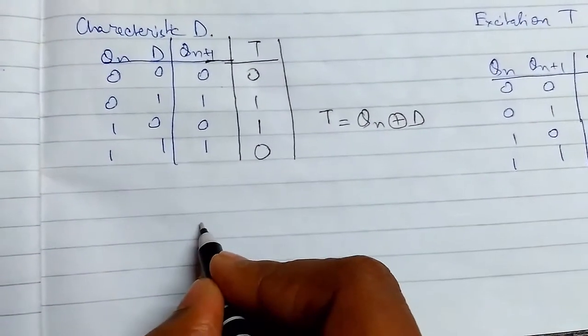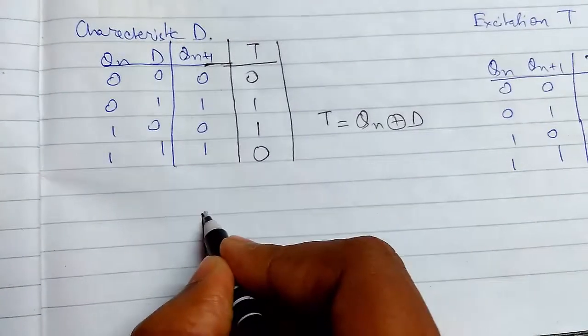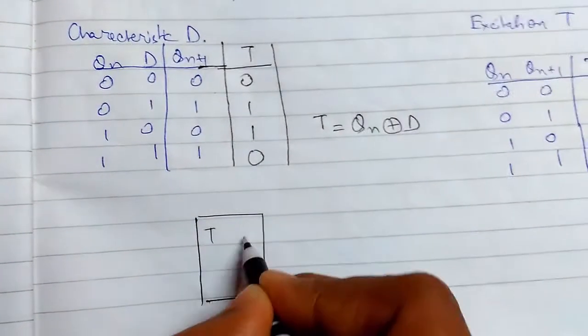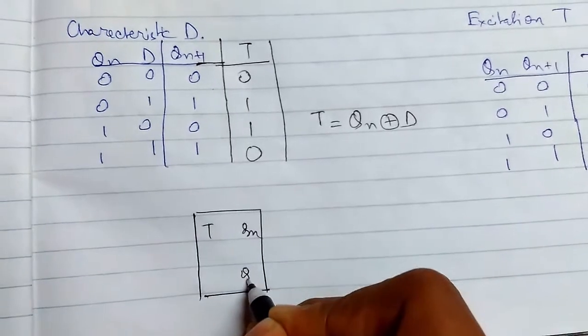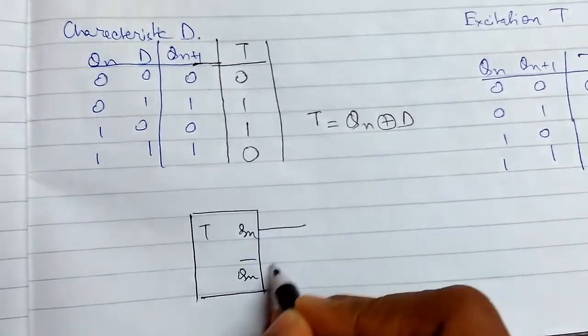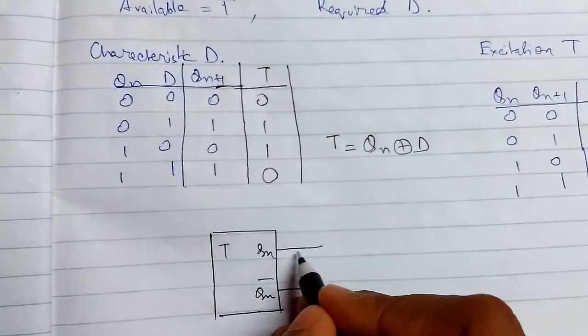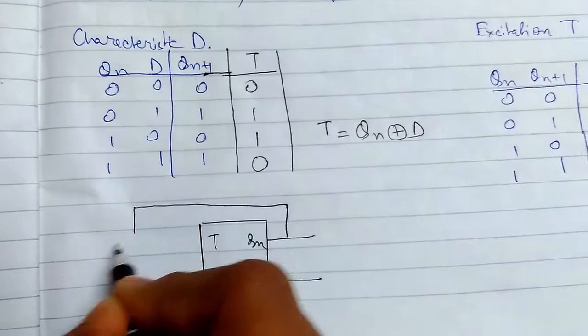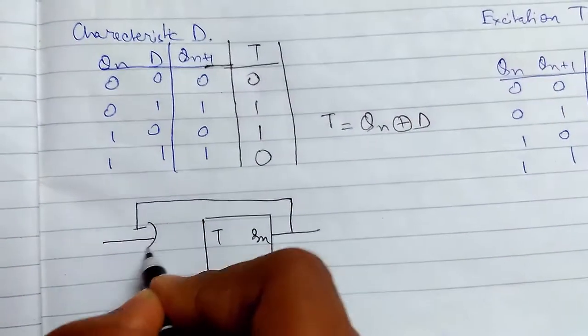So now we will just construct our flip-flop. So this was our T. This is QN. This is QN complement. So we need this QN value here. So we will be making something like this.